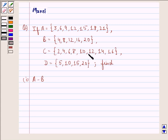C equals the set 2, 4, 6, 8, 10, 12, 14, 16, and D equals the set 5, 10, 15, and 20. Then find A minus B.